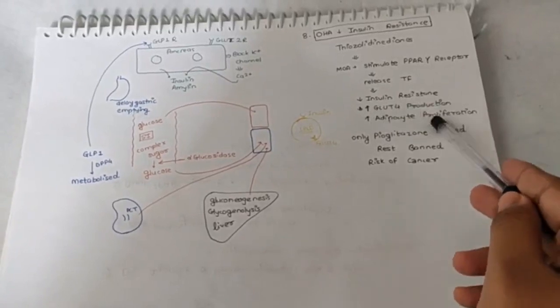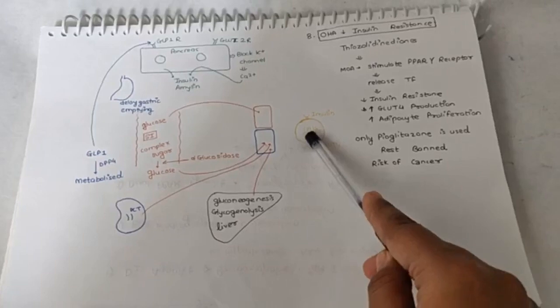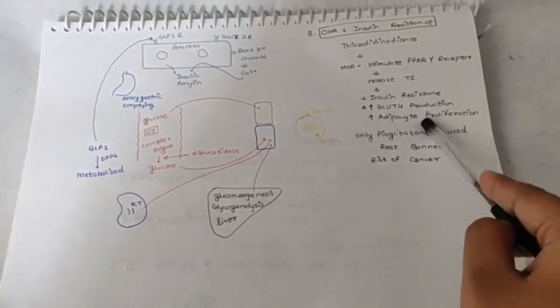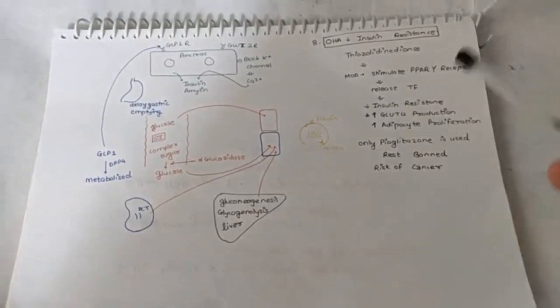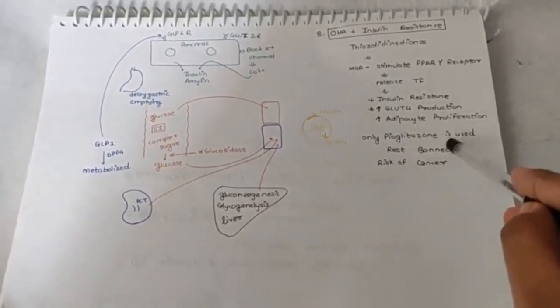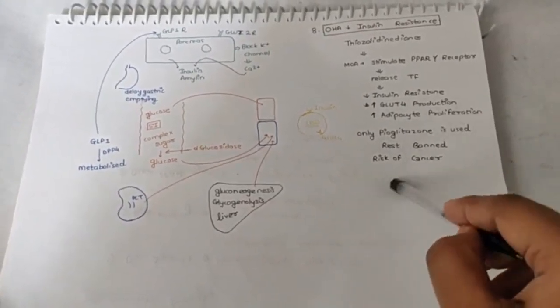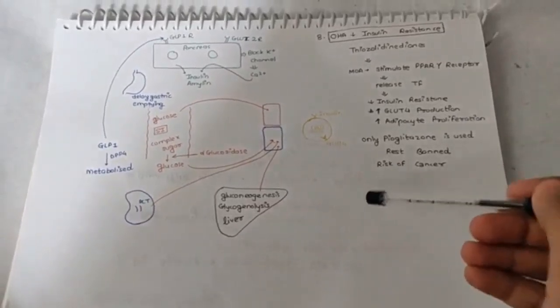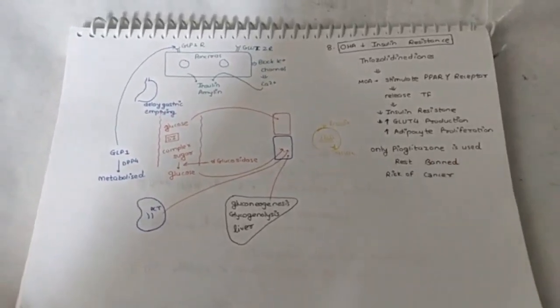Second, it also increases GLUT4 production. So uptake of glucose by the peripheral cell will also increase. And also it causes adipocyte proliferation. So this is the reason why weight gain is a common side effect of this classification of drug. However, in India, only pioglitazone is used. Rest of the drugs have been banned because there is a risk of cancer. Even with pioglitazone, there is a risk of bladder cancer. But being a cheaper drug, it is available as patients cannot afford the expensive drug. In other countries like US and UK, pioglitazone is also banned.